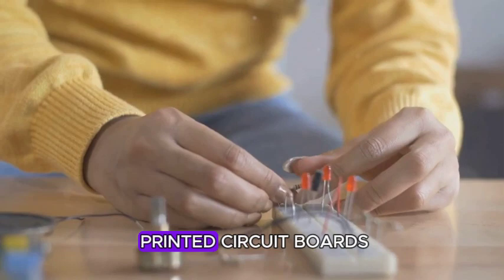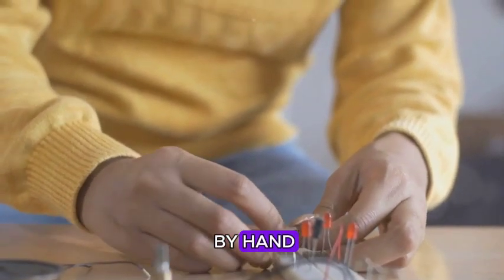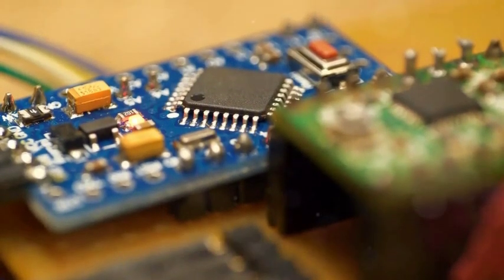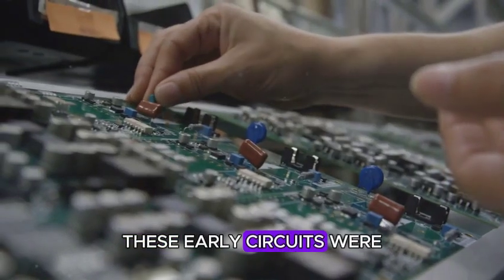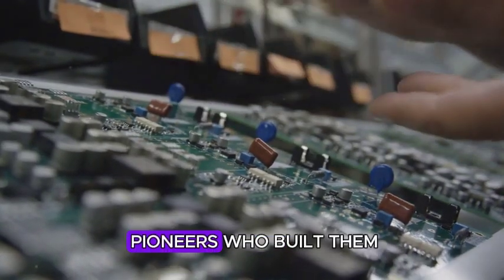Before the advent of printed circuit boards, circuits were painstakingly crafted by hand. Imagine a time before microchips and transistors, when bulky vacuum tubes were the heart of electronic devices. These early circuits were a testament to the ingenuity and patience of the pioneers who built them.